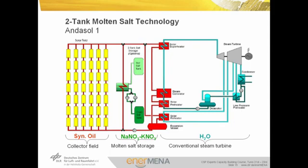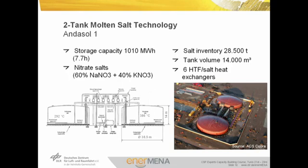An indirect molten salt storage system was first implemented at the Andasol power plants. Here, oil is used as HTF and the energy is transferred to the salt via a heat exchanger during the charging process. During discharge, the energy is transferred again from the molten salt to the thermal oil. The thermal oil is then used to generate steam. The temperature difference between hot and cold tank is in the range of about 90 degrees, so the mass-specific storage capacity is about one-third of the SOLAR2 system. This picture shows an exemplary implementation of an indirect two-tank molten salt storage system at the Andasol power plants.